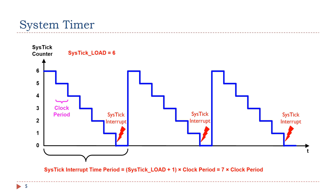The interval of the system timer interrupts equals the reload value plus 1, times the period of the source clock.